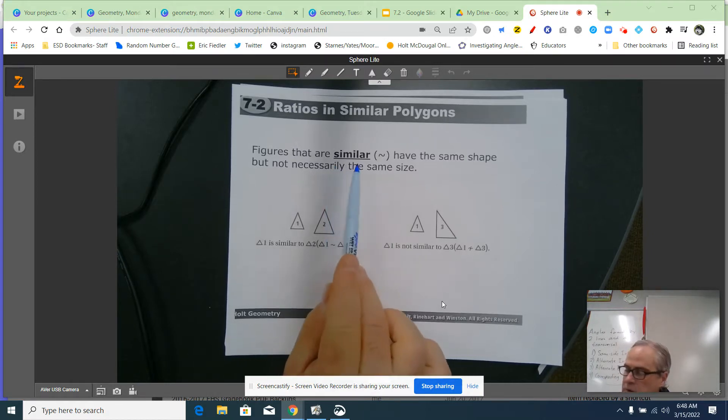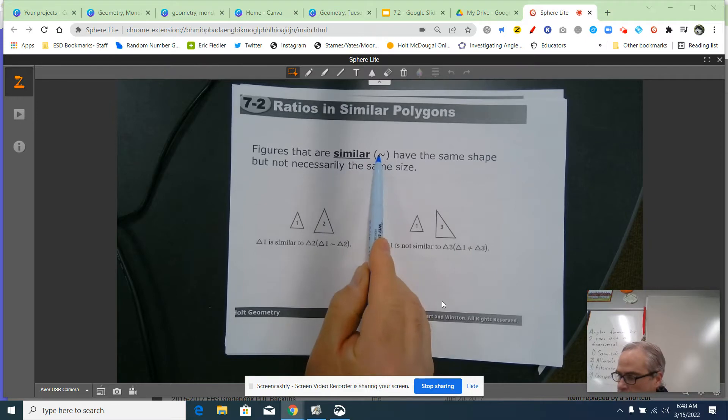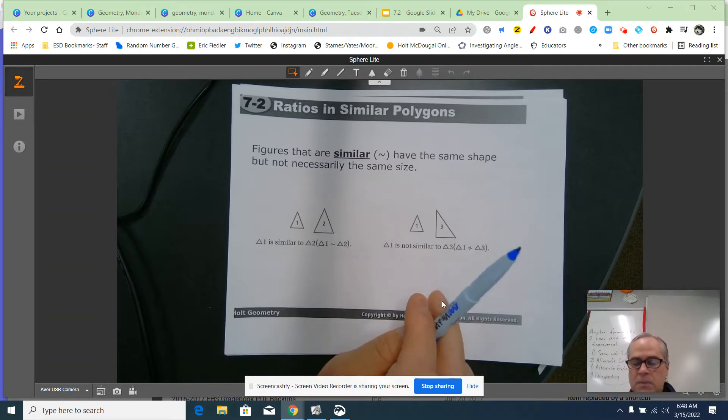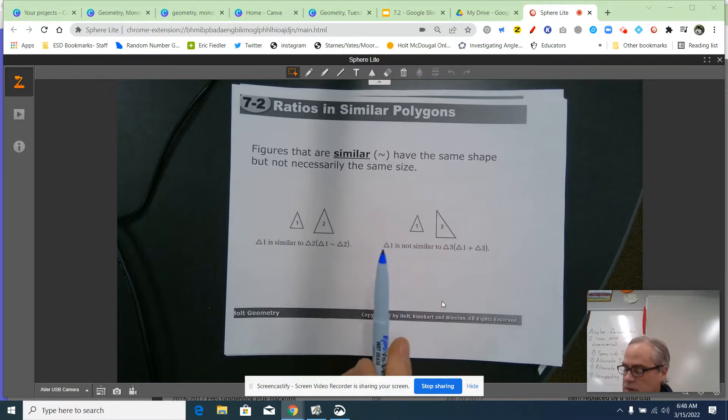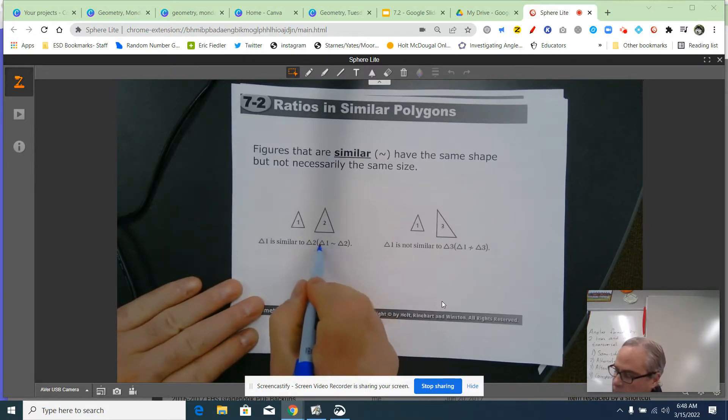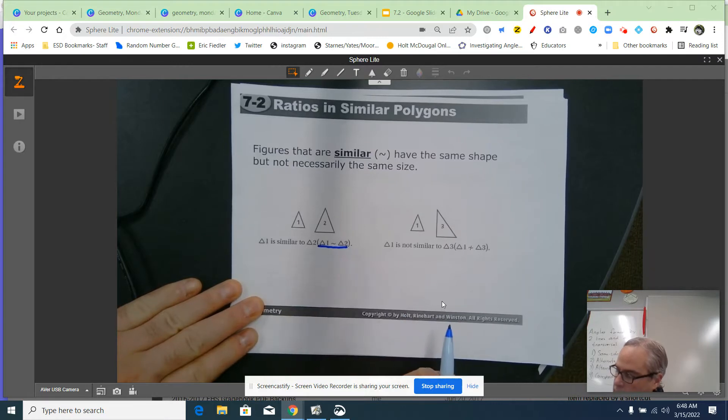Here's the first piece. Figures that are similar, and notice this little squiggly right here. This is a symbol that means is similar to. Figures that are similar have the same shape but not necessarily the same size. So compare that to congruent. Congruent means same size and shape. Similar means same shape but not necessarily the same size. For example, look at triangle 1 and triangle 2. If I say they're similar, I can write the similarity statement like triangle 1 is similar to triangle 2.